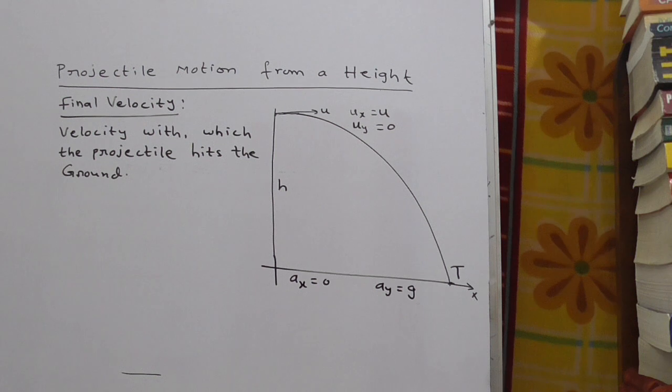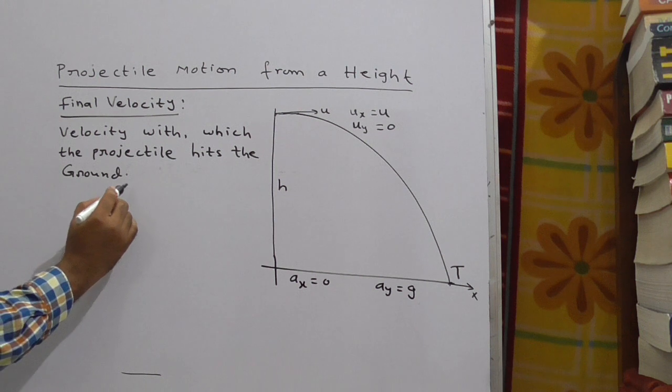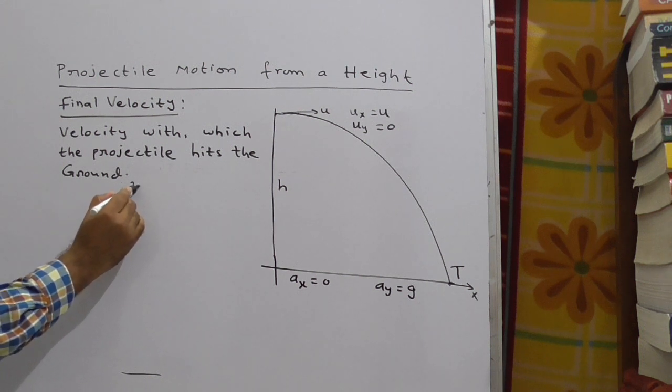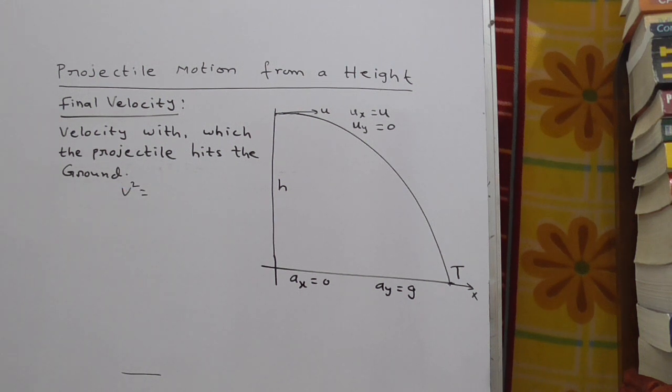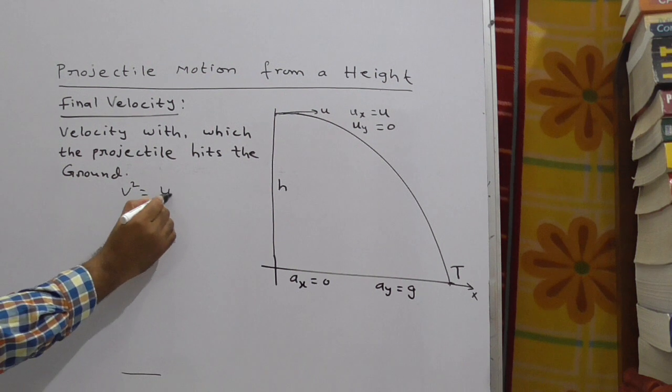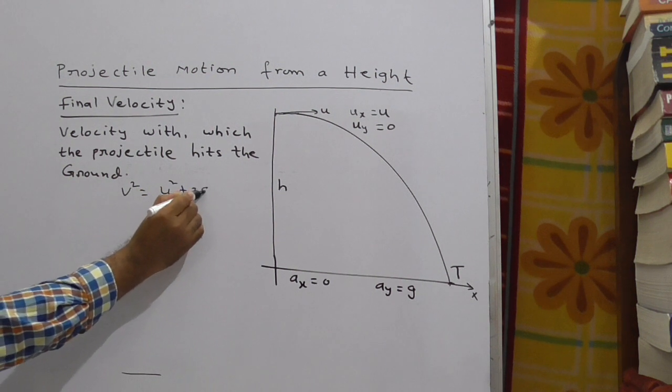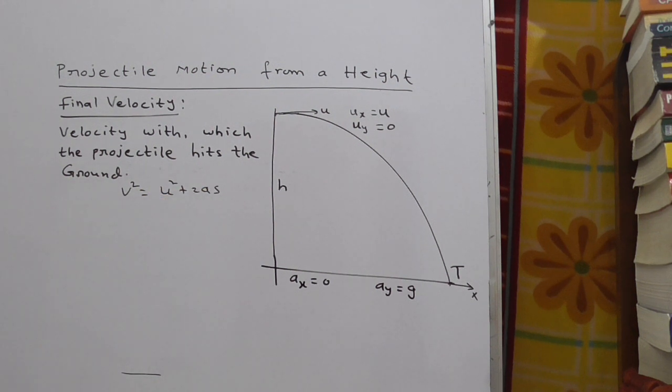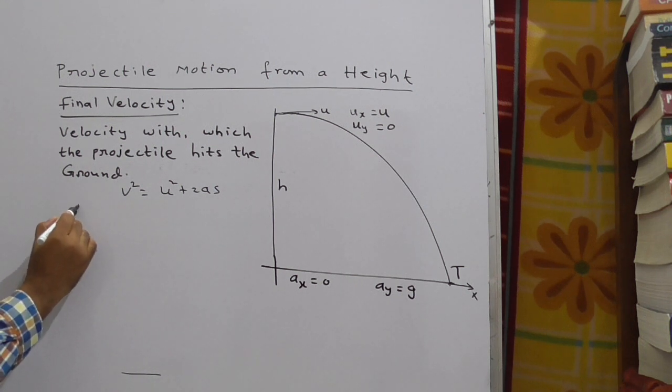So to derive this final velocity equation, we have to consider the basic formula that is v² = u² + 2as. So first with respect to x, find the value.